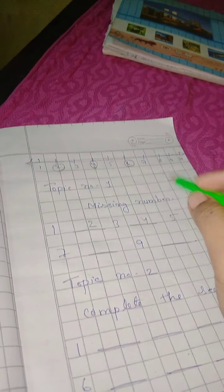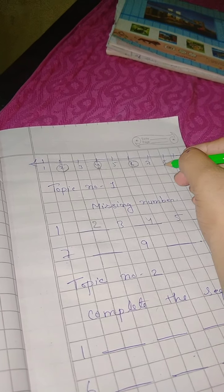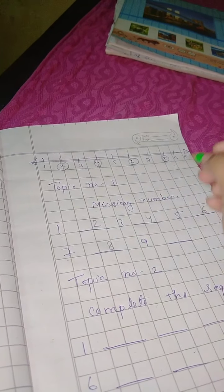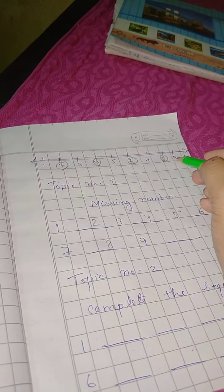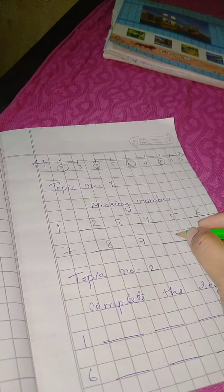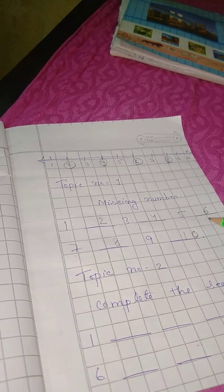Seven and nine, what are we missing? Eight is missing, we will write 8. Now we will write 9.